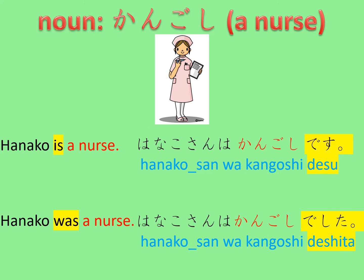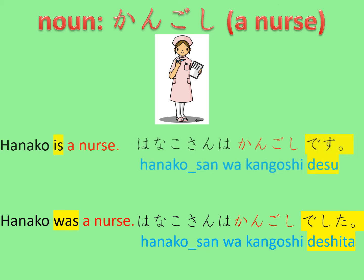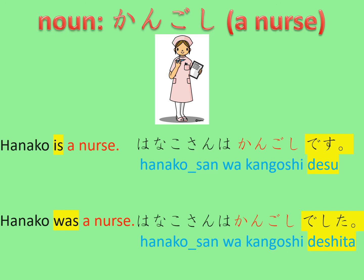With this sentence pattern, nouns and na-adjectives behave exactly the same. 'Hanako is a nurse' is 'hanako-san wa kango-shi desu,' and if you want to change that into 'Hanako was a nurse,' you have to say 'hanako-san wa kango-shi deshita.'